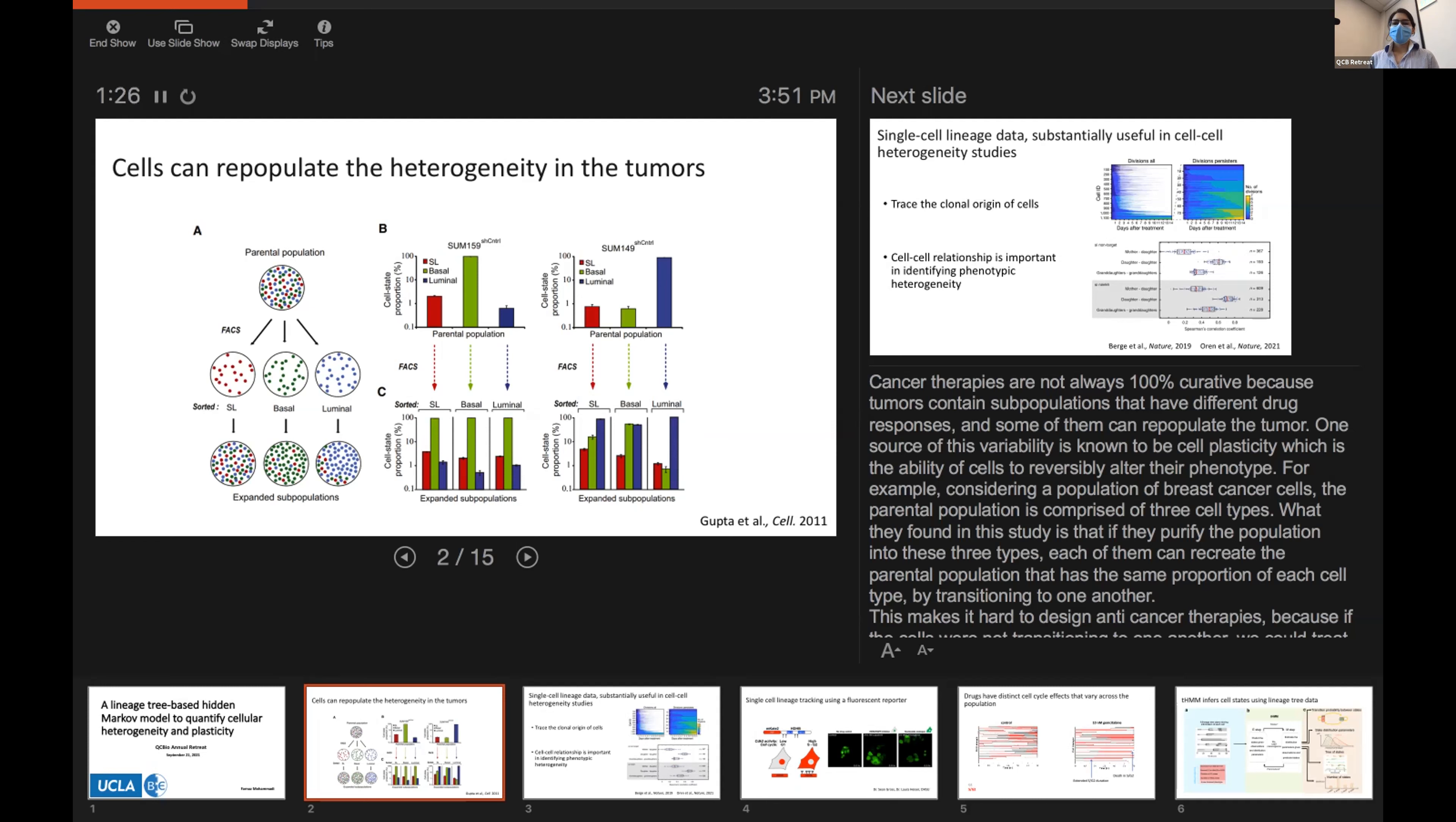This means that the cells have been altering their phenotype and transitioning to one another, which makes it hard to design anti-cancer therapies because if we had only those purified populations, we could treat them with their relevant drugs and eliminate the tumor, but this makes it complicated to design anti-cancer therapies.